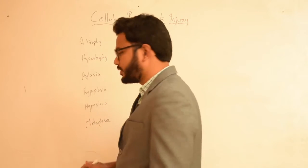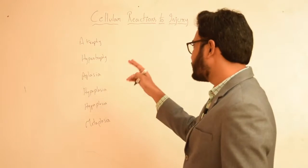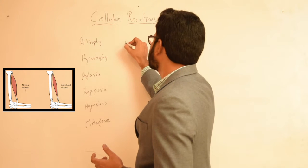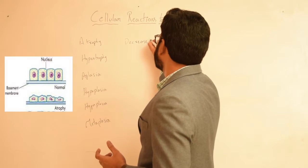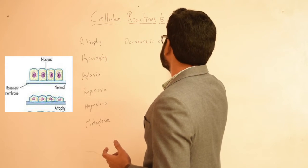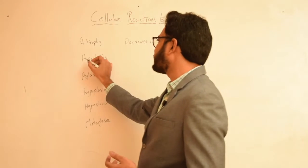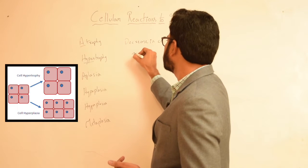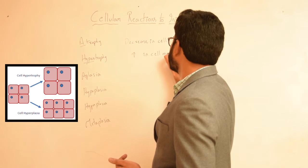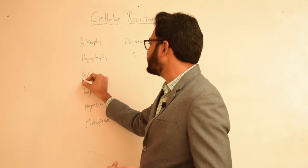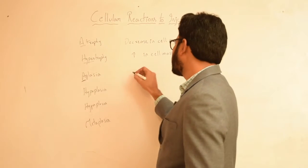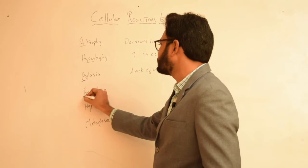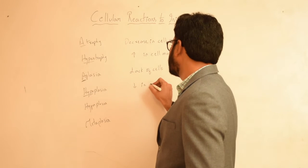As the name itself indicates, atrophy is a decrease in cell size, volume, as well as cell mass. Hypertrophy is the opposite of atrophy — 'hyper' means increase, so there is an increase in cell mass. Aplasia — 'a' indicates absence — so there is absence or lack of cells in case of aplasia. Hypoplasia means decrease in the number of cells.